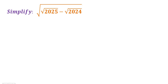Hello, in this video we have an expression with nested radicals — radical here, radical here, and radical here. It is the square root of square root of 2025 minus square root of 2024. So how do we simplify this?